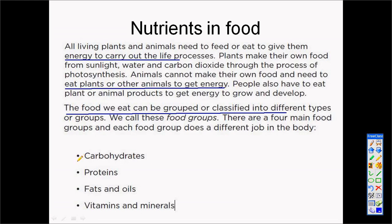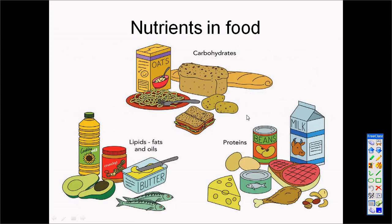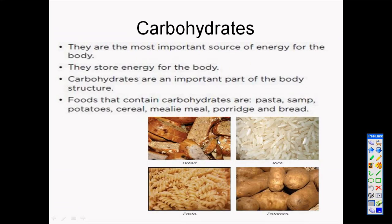The first food group is carbohydrates, then proteins, fats and oils, and vitamins and minerals. Carbohydrates are found in foods like rice, potatoes, spaghetti, and also bread. Our body uses carbohydrates for energy, so we eat carbohydrates when we require a lot of energy. Our body also stores these carbohydrates for later use. If we take in too much carbohydrates, our bodies will actually store that in the form of fat, and that we will use at a later stage when we need that energy.